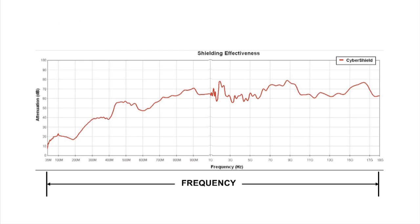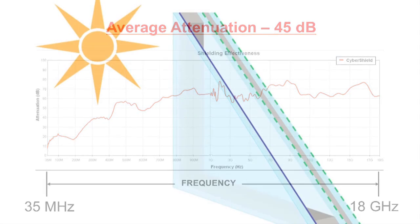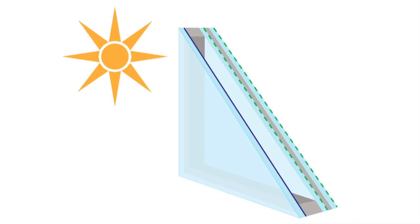CyberShield offers electrical attenuation with an average of 45 decibels across a frequency range from 35 megahertz to 18 gigahertz, while optimizing visible light transmission with a neutral glass color.